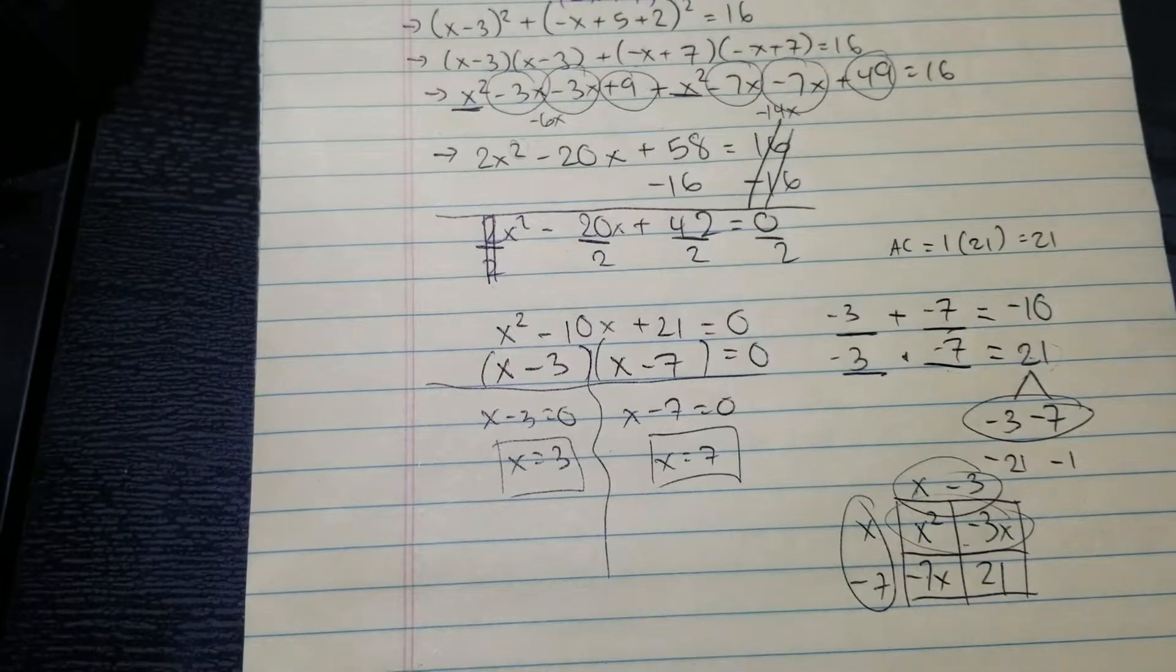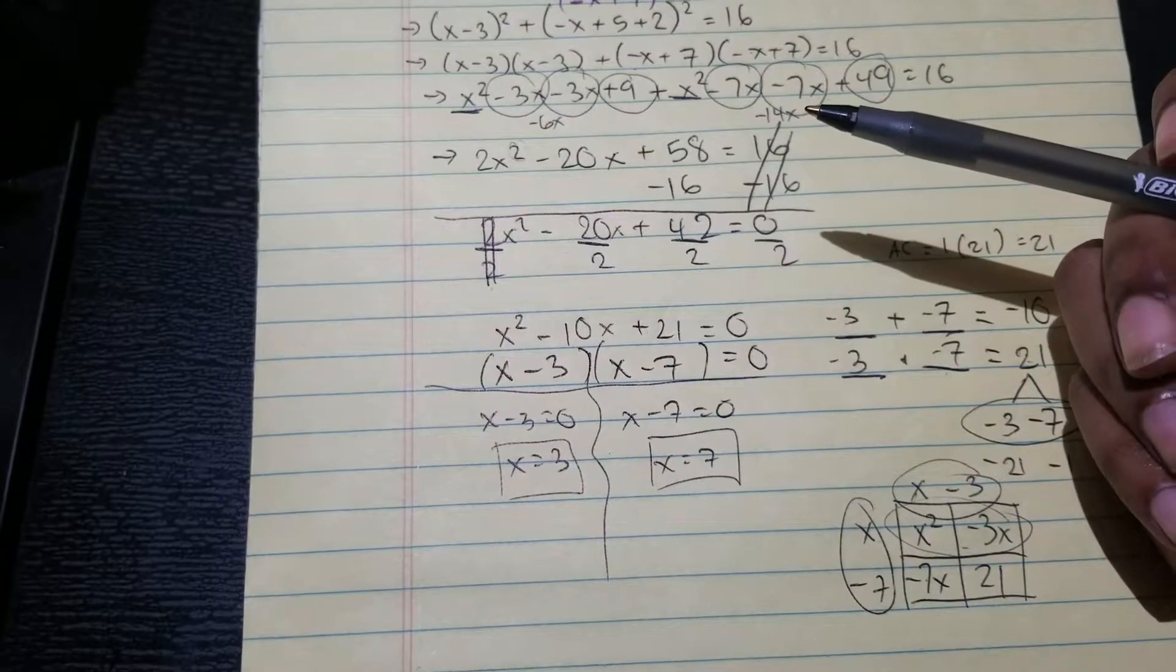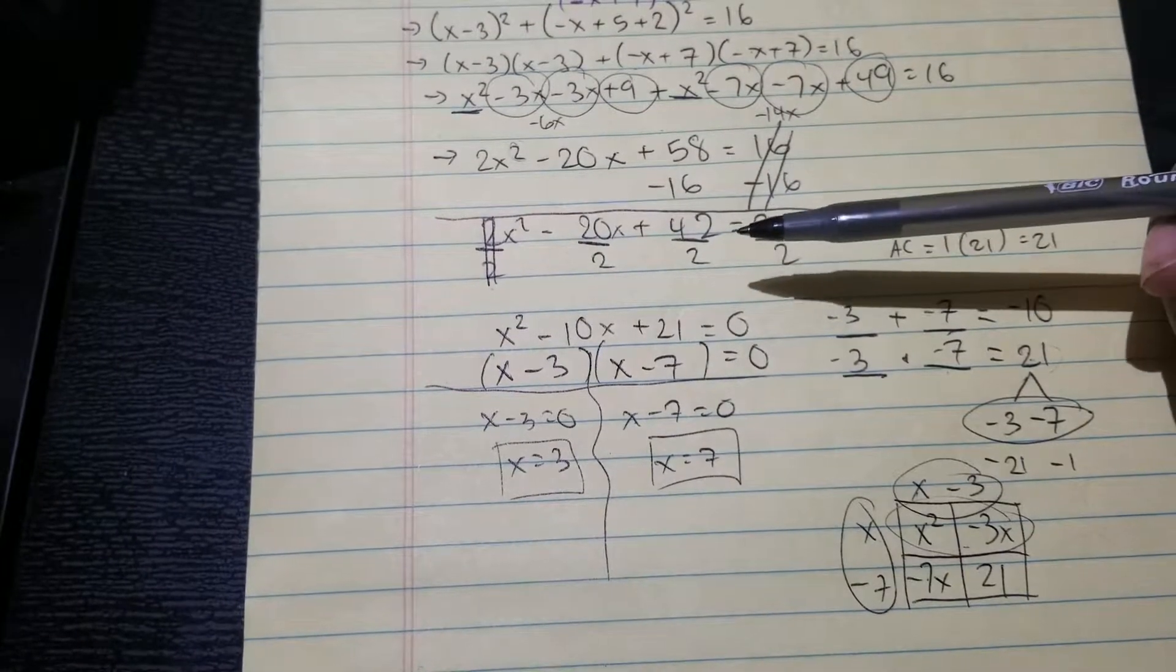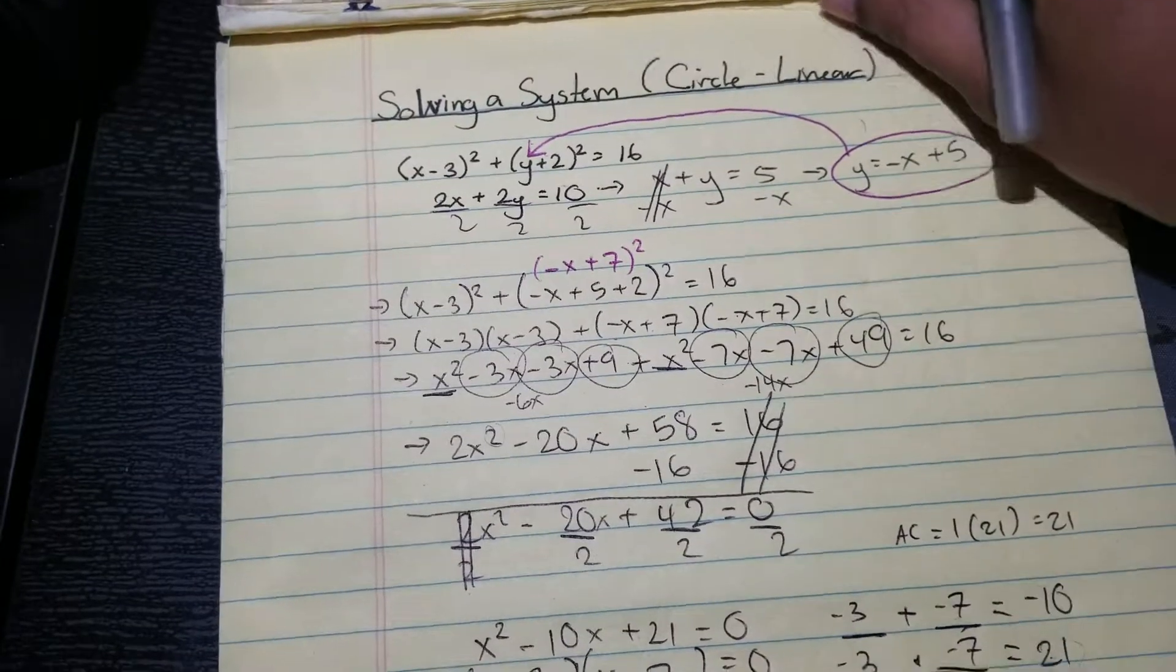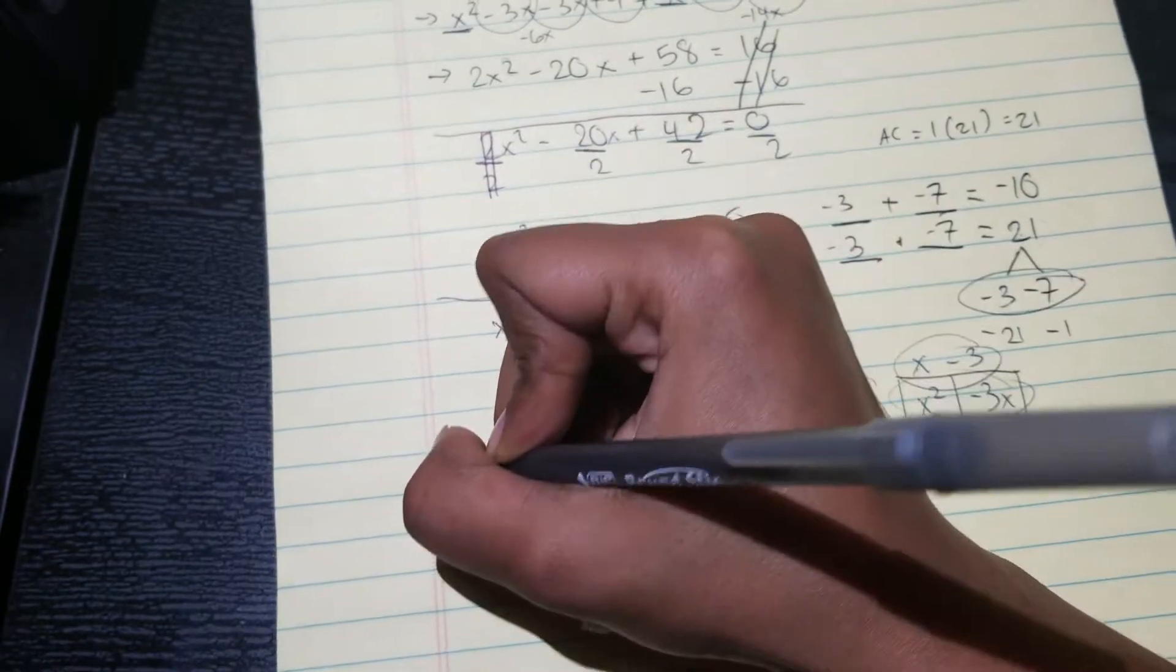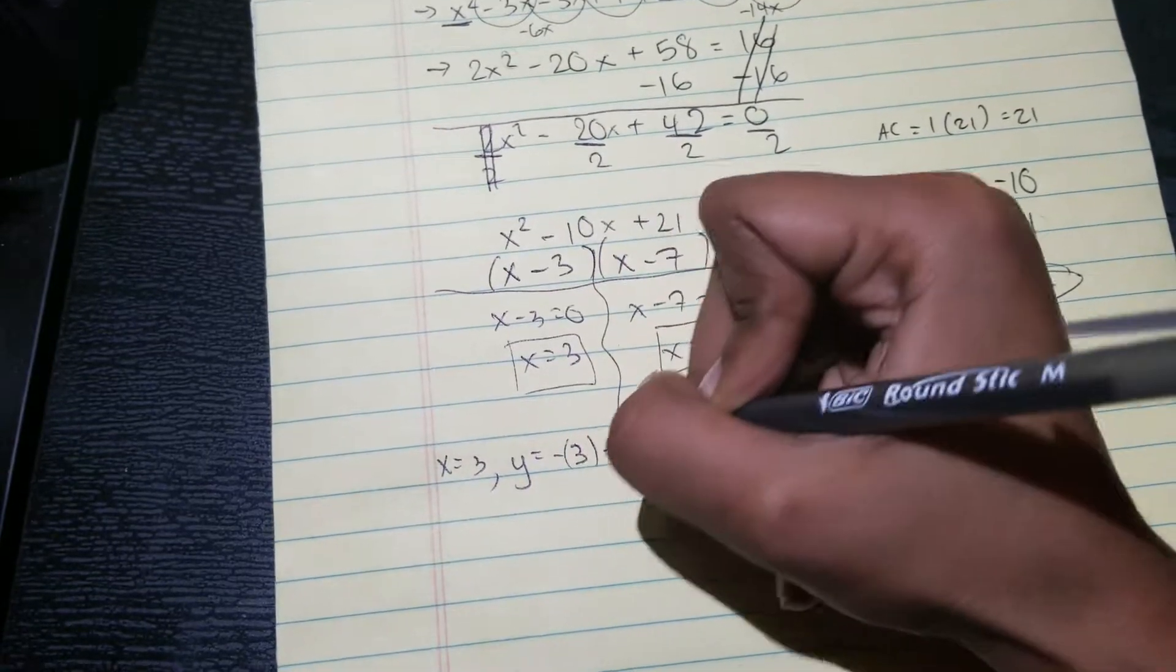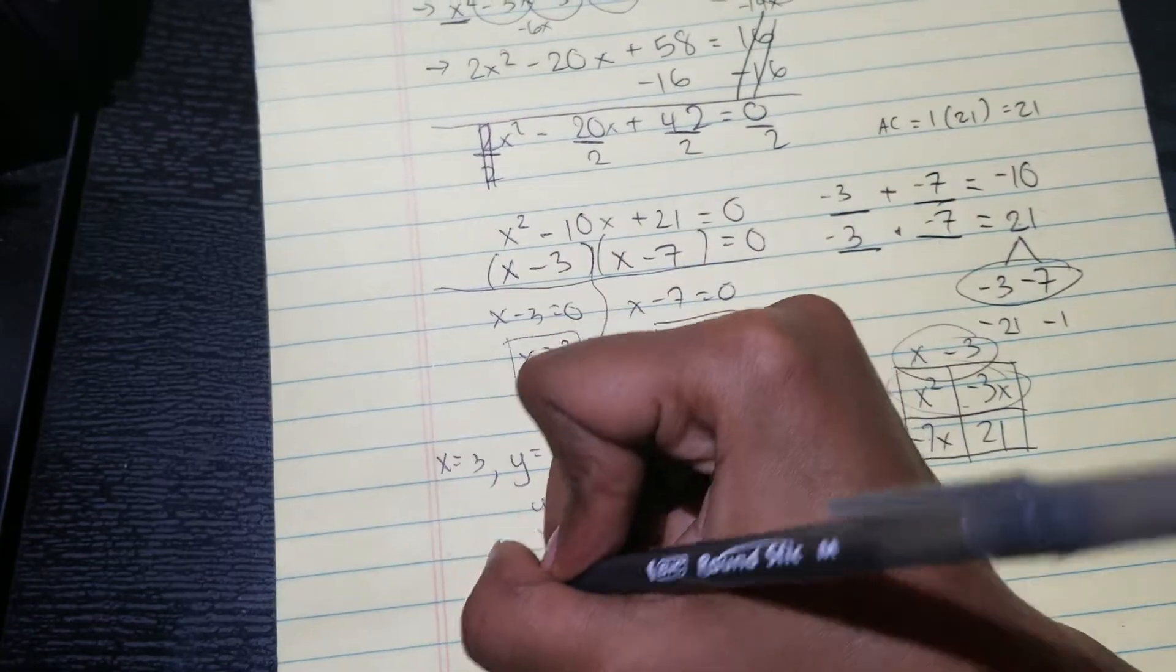So then now you want to, once you solve your x value, you want to solve for their y values. Because when we solve our system, it depends on the problem: they can either ask just for the x values, or they actually want the coordinate points. I'm gonna go to the next step and solve for the coordinate points. I'm gonna take these x values and plug them into our simplified linear equation, and then we should be good to go. So then when x equals three, I have y equals negative three plus five, that's y equals two. So then my coordinate point will be three comma two.